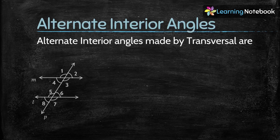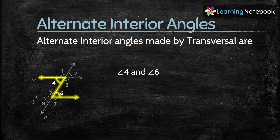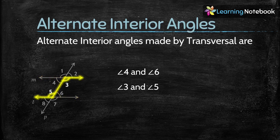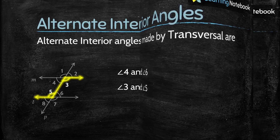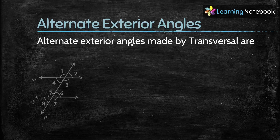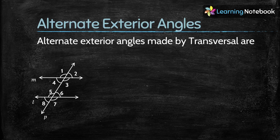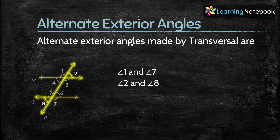Now let's understand alternate interior angles. Angle 4 and angle 6 are alternate interior angles. Similarly, angle 3 and angle 5 are also alternate interior angles. Among the exterior angles — angle 1, 2, 7, and 8 — angle 1 and angle 7 are alternate exterior angles, and angle 2 and angle 8 are also alternate exterior angles.